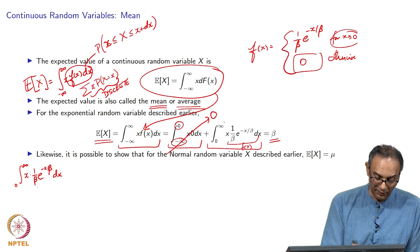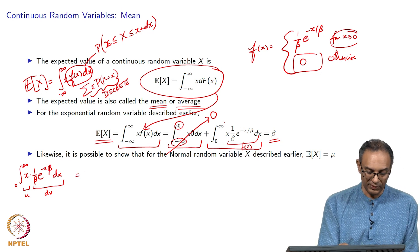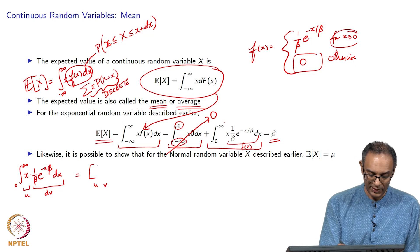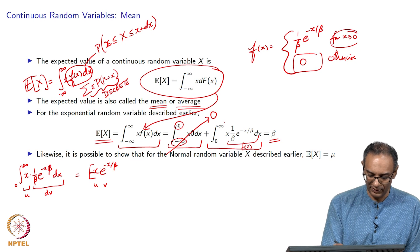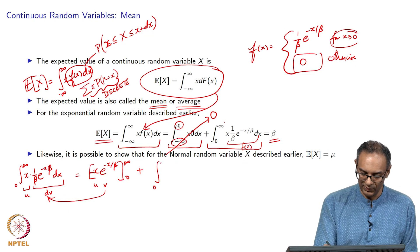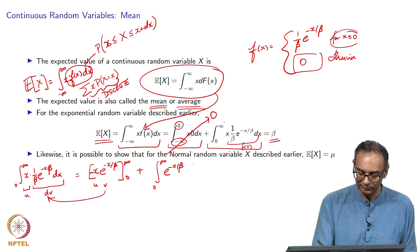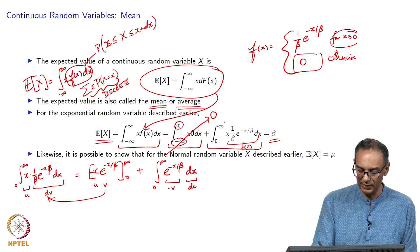What we are left with is the integral from 0 to infinity of x times (1/beta) * e^(-x/beta) dx. We want to perform this integral. When we see something like this, we use integration by parts. This would be u times v, which gives u*v = x times e^(-x/beta) with a negative sign, from 0 to infinity, plus the integral from 0 to infinity of e^(-x/beta) dx.